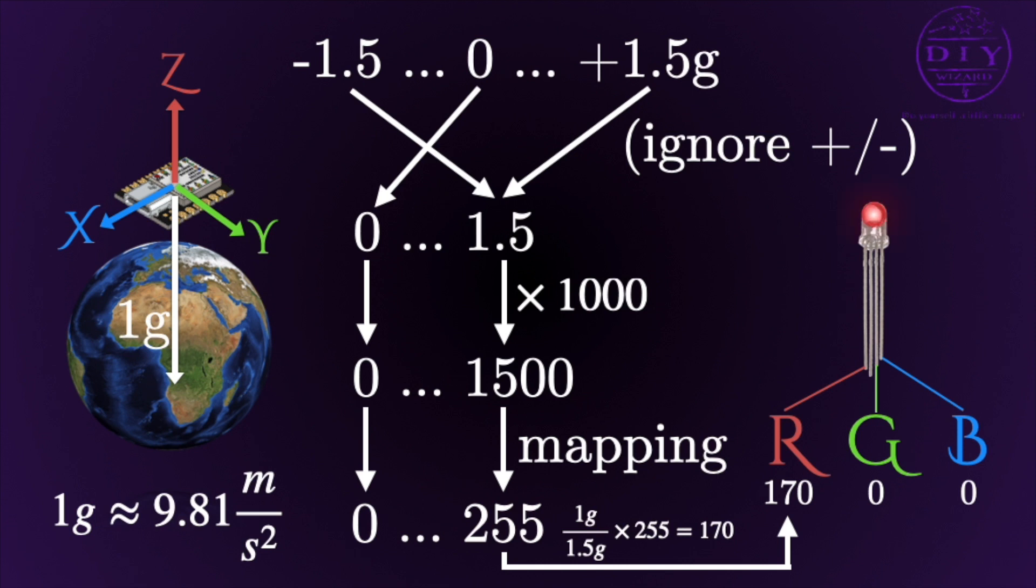And the other two colors get the acceleration numbers from Y and X. So every wave in one direction causes one color to light up. That's what the idea is in this program.